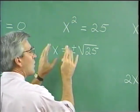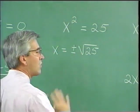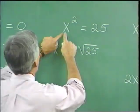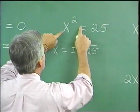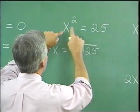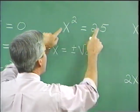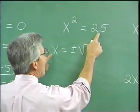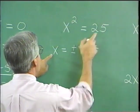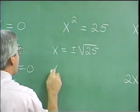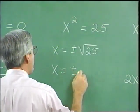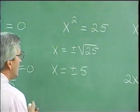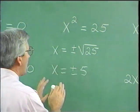It's really this: a variable squared, set equal to a real number — in that circumstance, that variable is equal to plus or minus the square root of the real number. Here we have x equals plus or minus 5, and those represent our two answers. That is extracting square roots.